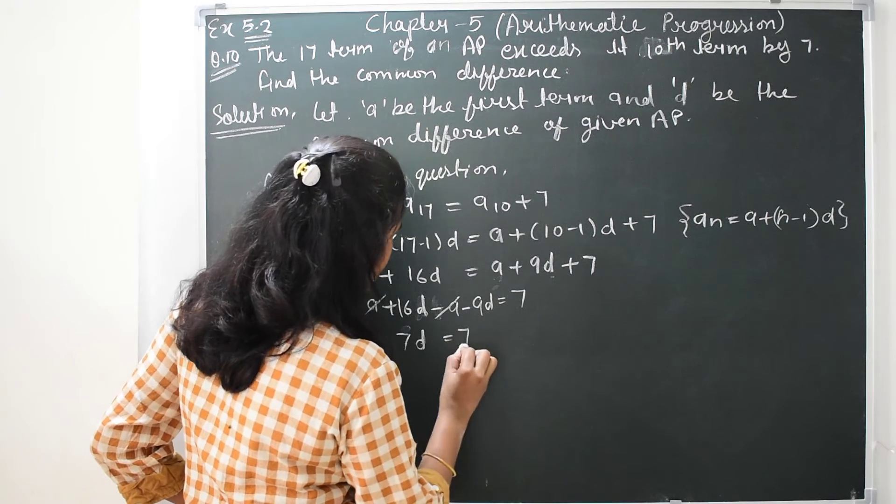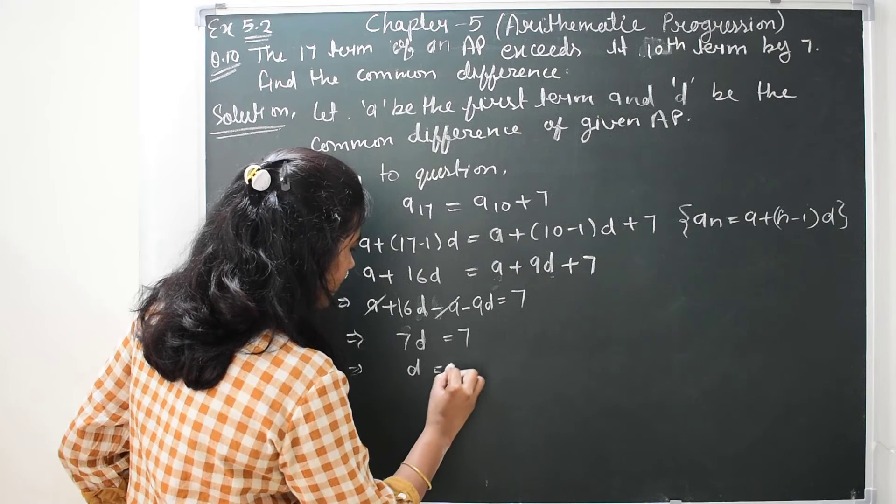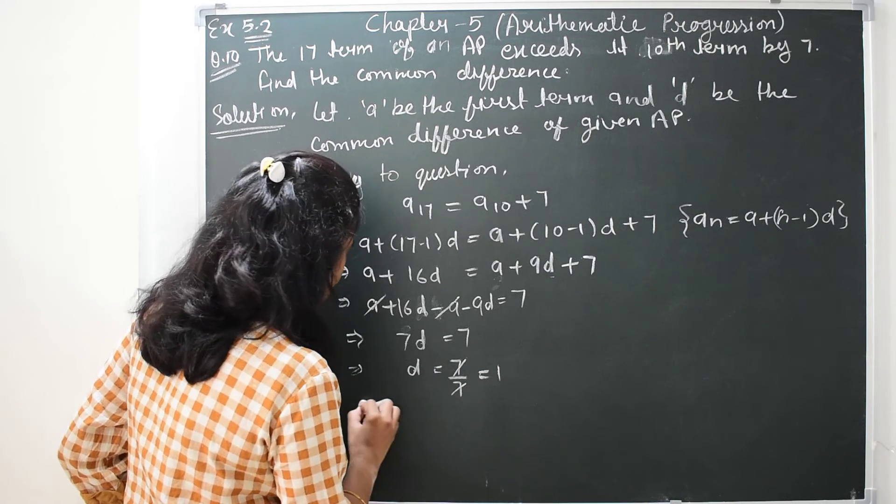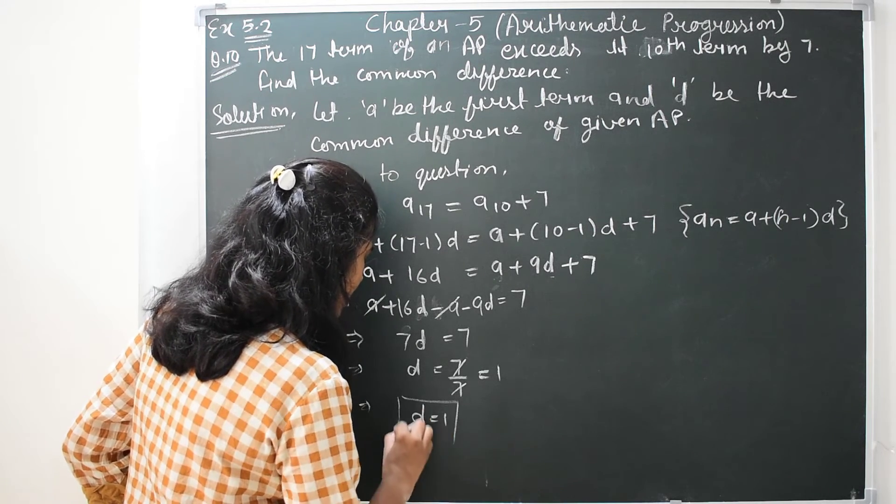7D is equal to 7, so D equals 7 divided by 7, that is equal to 1. That means D is equal to 1.